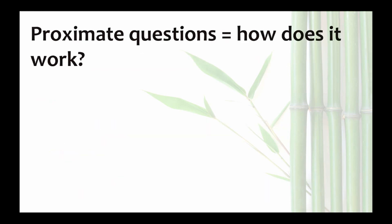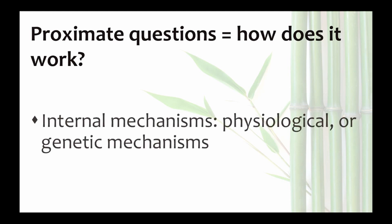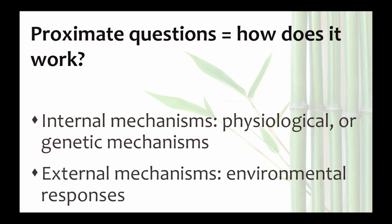Proximate questions explain how living systems work. They deal with mechanisms. These mechanisms can be internal, such as how genes are turned on or off, or how nerve cells work, or how cells communicate. These mechanisms can also rely on external signals, such as how an organism responds to environmental changes.